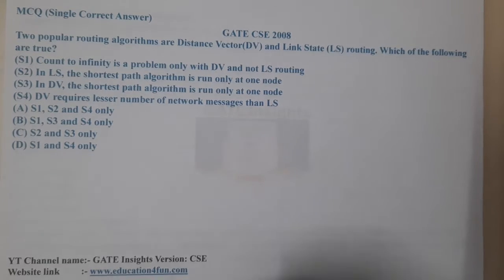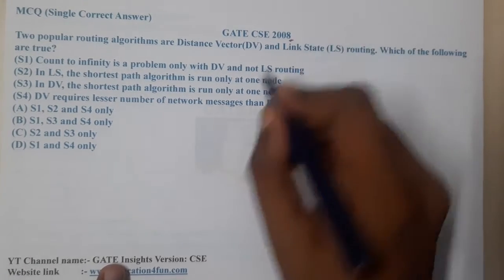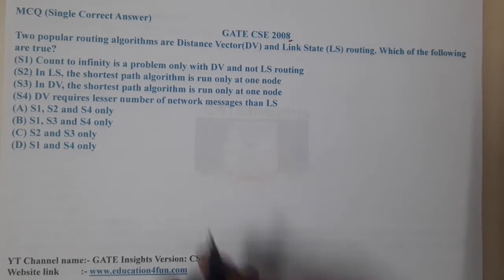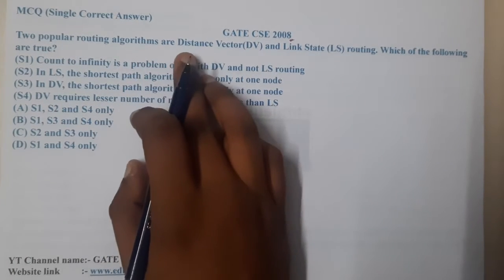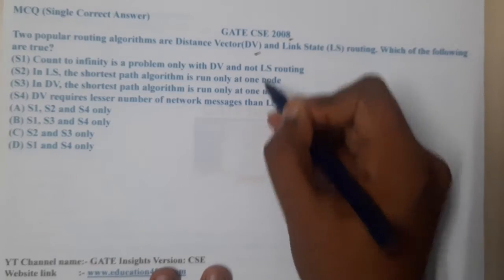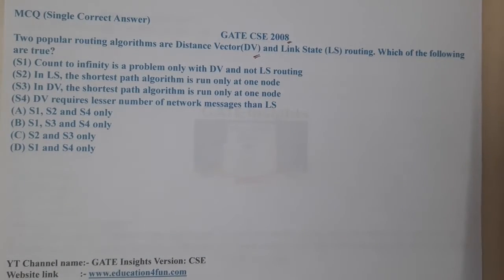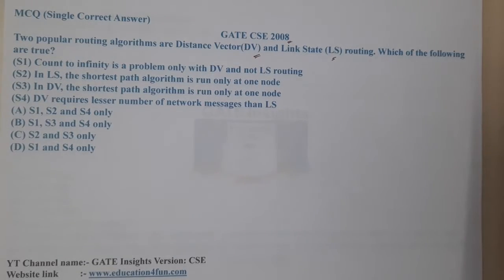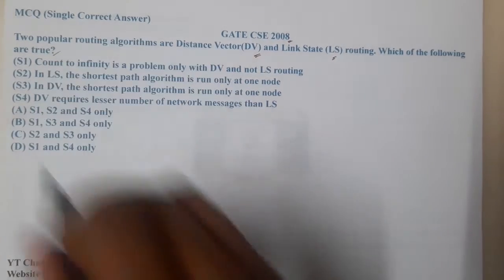Hello guys, we are back with our next lecture. This question belongs to GATE CSE 2008. The question is: two popular routing algorithms are Distance Vector routing and Link State routing. Which of the following are true?